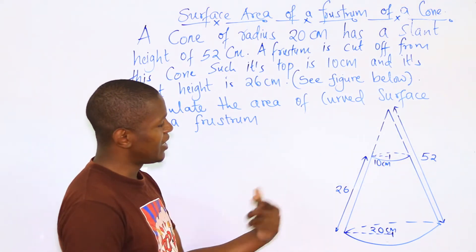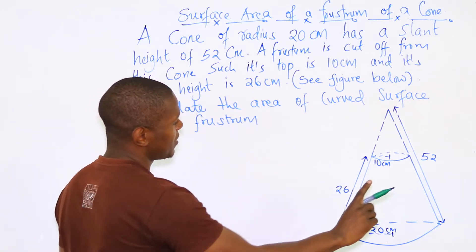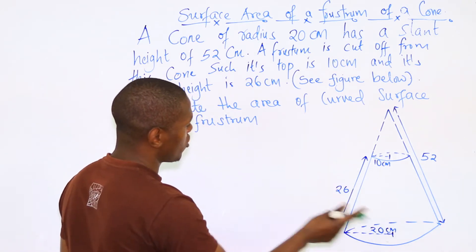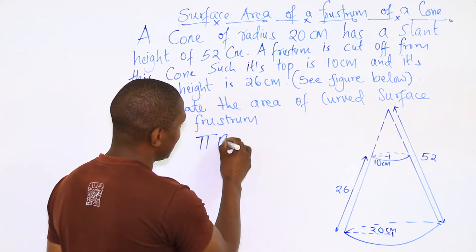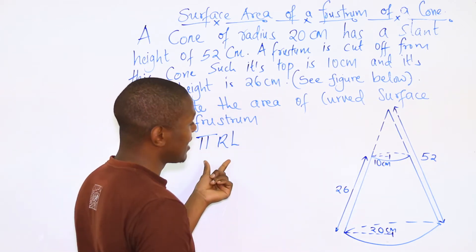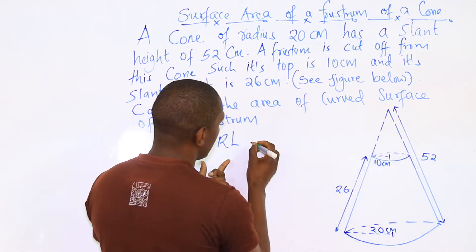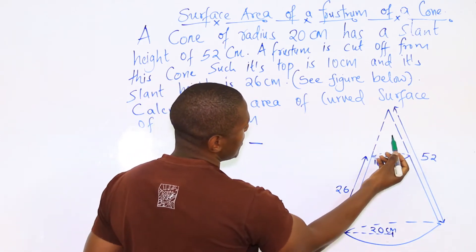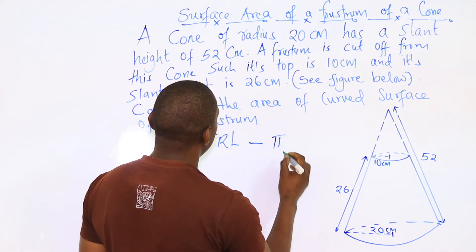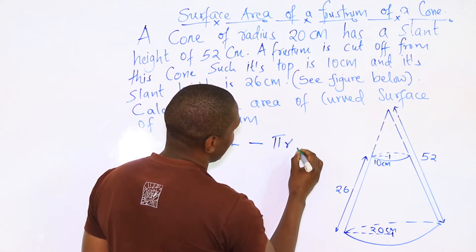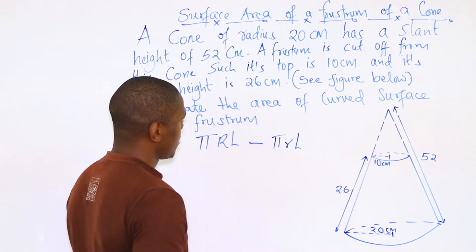To find the area of the curved surface of this frustum, you find the area of the curved surface of the larger cone, which is given as π r l, then subtract the curved surface area of the smaller cone, which is also given as π r l.